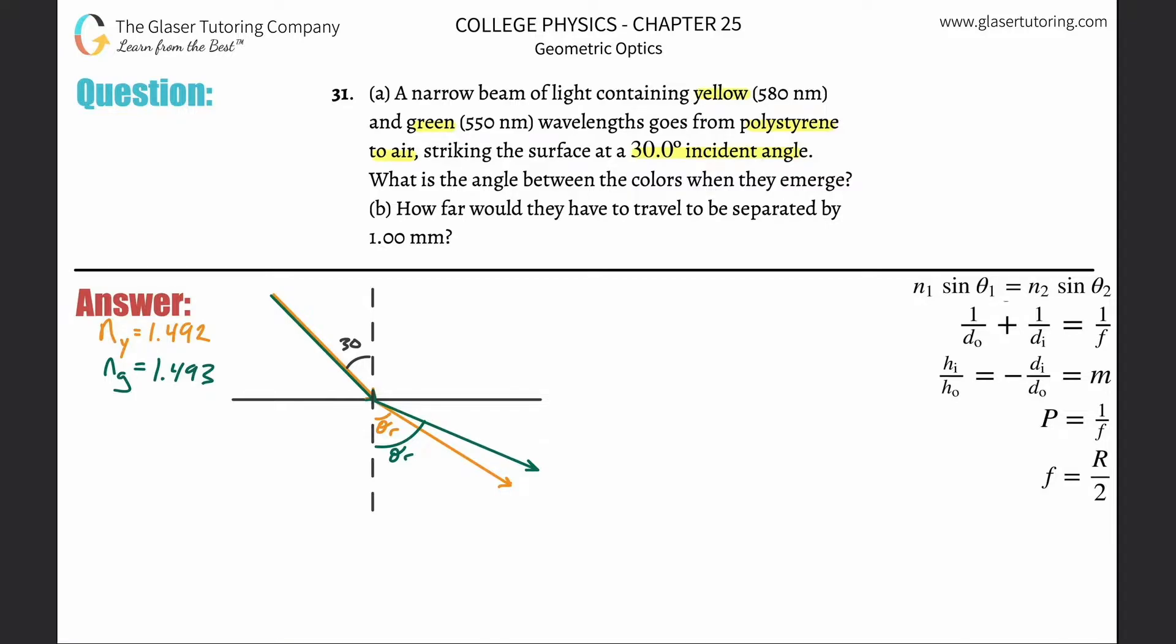So what they're asking us to do here is calculate the angle between these two. In order to calculate the angle between these two, maybe what I'll do is calculate the green angle of refraction and the yellow angle of refraction. Remember they are both in reference to the y-axis or the normal here, and then I can just take the difference between them.